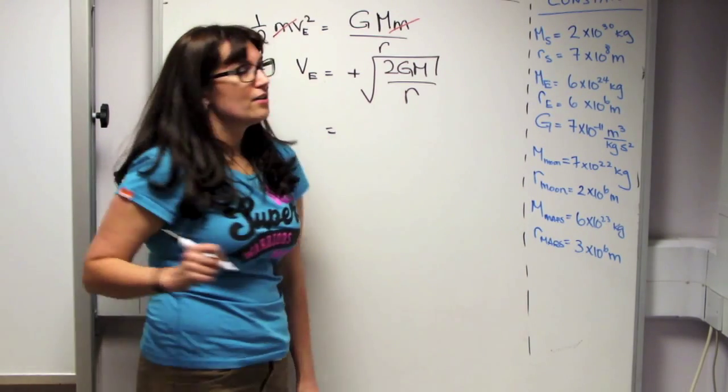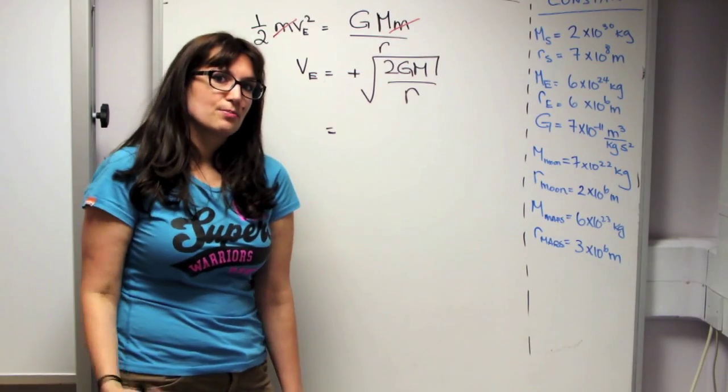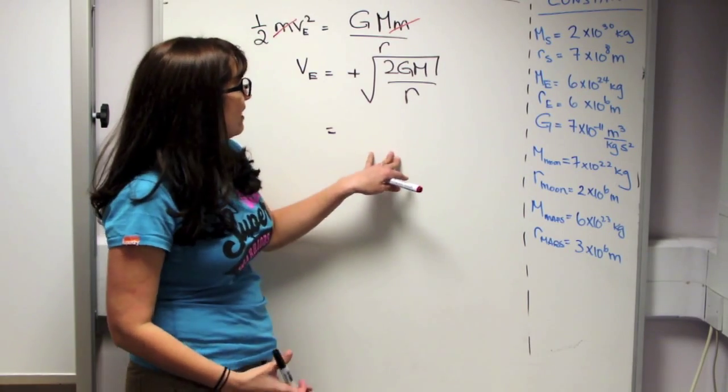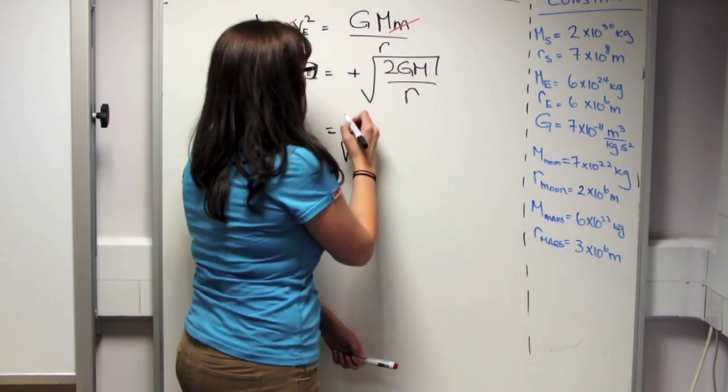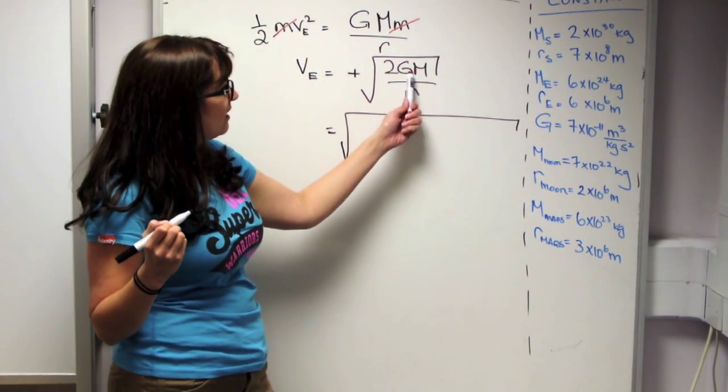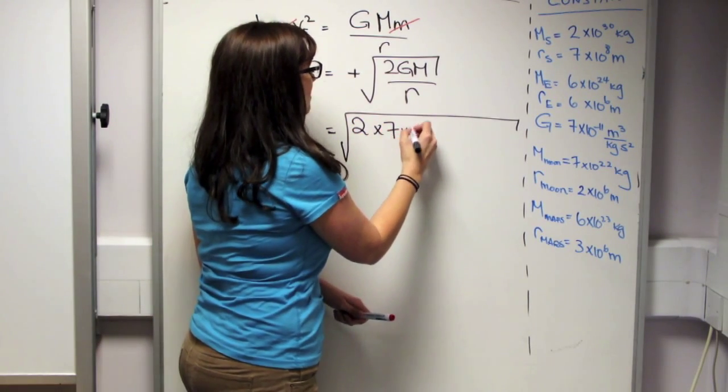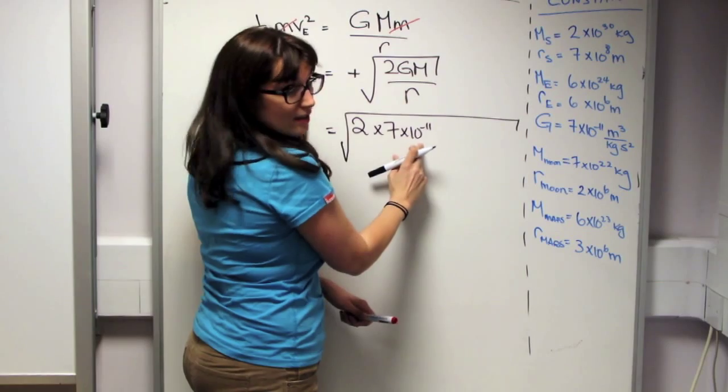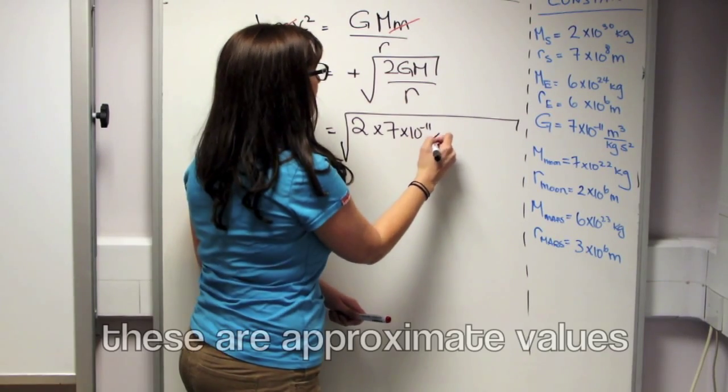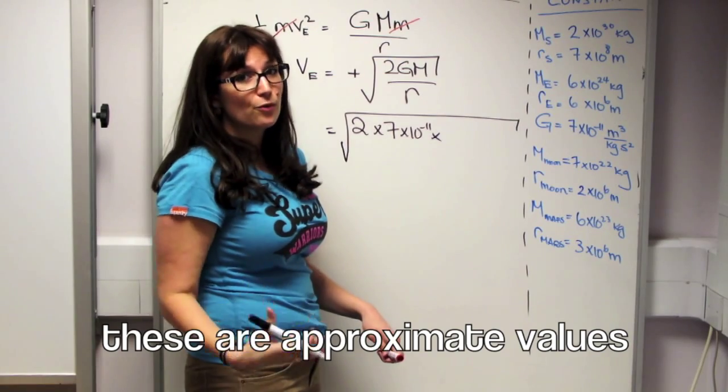So the escape velocity of the Earth, we told you in our last episode, was about 11 kilometers per second. And this is how we find it. So if we substitute in the values of G, M, and R, we find 2 times 7 times 10 to the minus 11. This is G times the mass of the Earth, which is about 6 times 10 to the 24 kilograms.